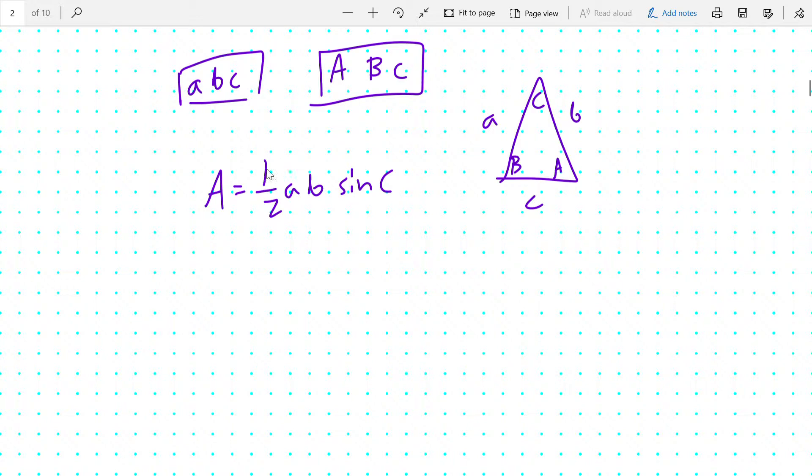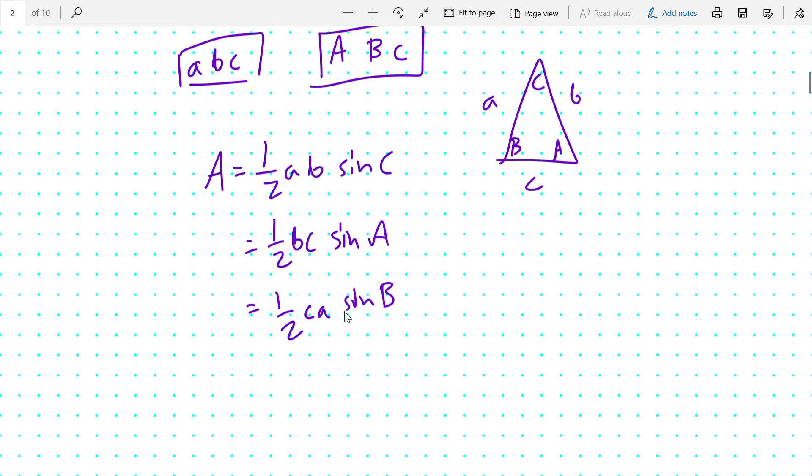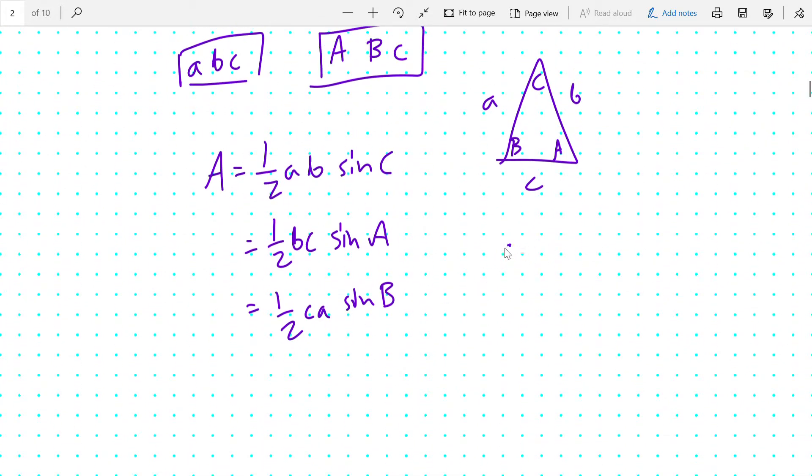Two key formulas here: the area of a triangle is ½ × a × b × sin C, or it's ½ × b × c × sin A, or ½ × c × a × sin B. It is just the two sides and the angle between them. Then you also have the sine rule: a/sin A = b/sin B = c/sin C.